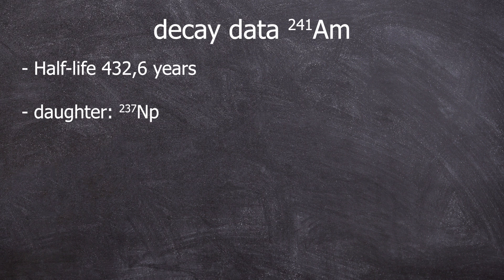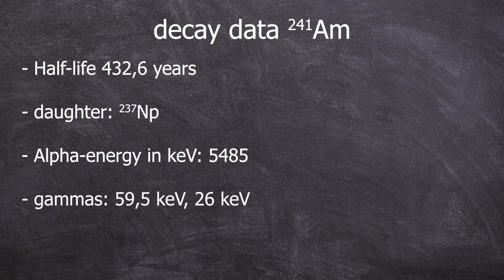It decays to neptunium-237 via alpha decay with an energy of 5485 keV. Americium-241 is often used as gamma calibration standard because it has a low-energy 59.5 keV line. Additionally, it has another line at 26 keV which are among the most common ones.